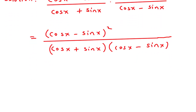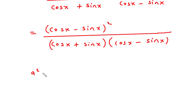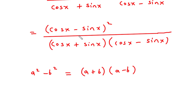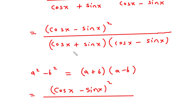Now we have a formula: a squared minus b squared is equal to a plus b into a minus b. Applying this to the denominator, cos x plus sin x into cos x minus sin x becomes cos squared x minus sin squared x.